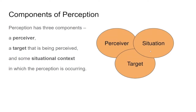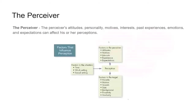What exactly is the perceiver involved in? The perceiver's attitudes, personality, motives, interests, past experience, emotions, and expectations all affect his or her perceptions. Because of your background, what you were thinking, the conversation you just had, or the environment you come from — you can perceive things in a certain way.